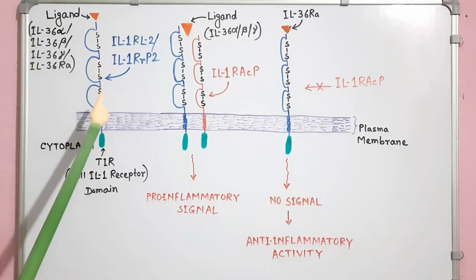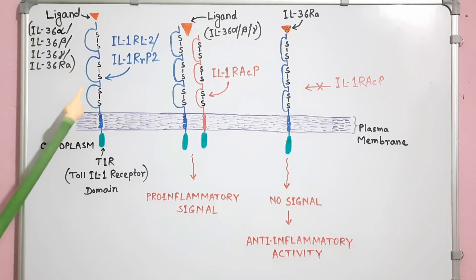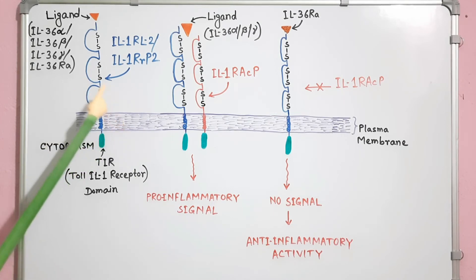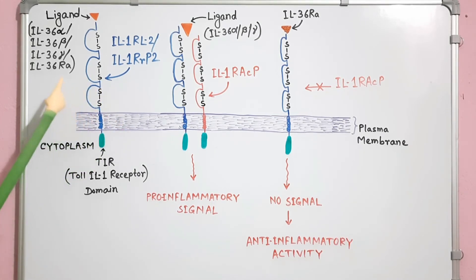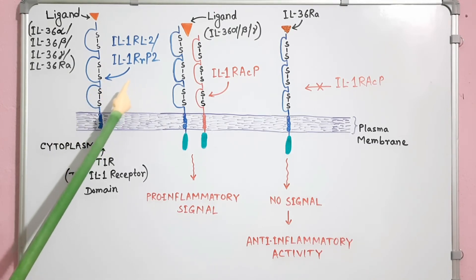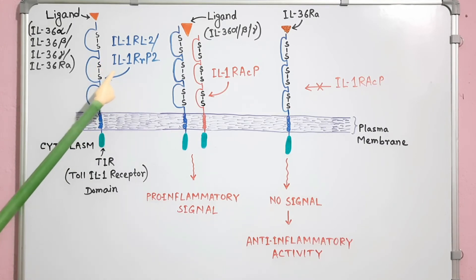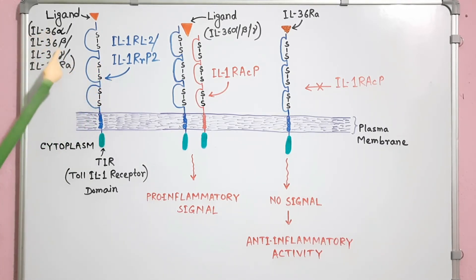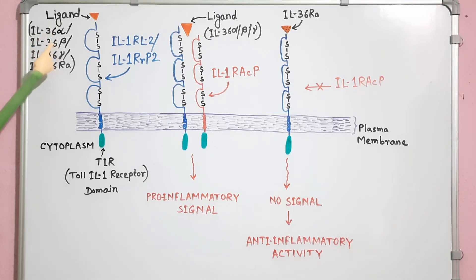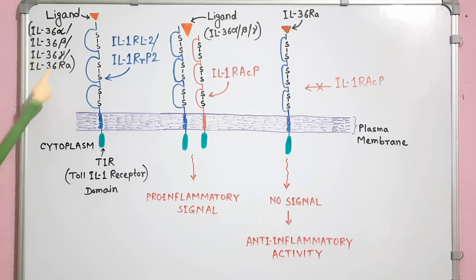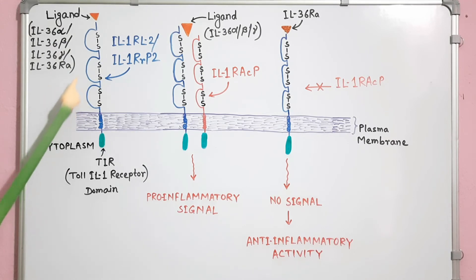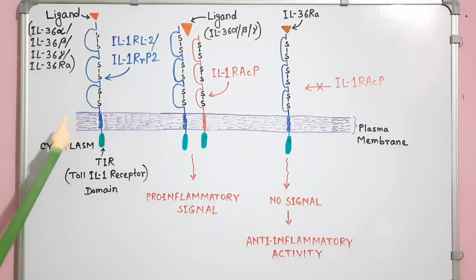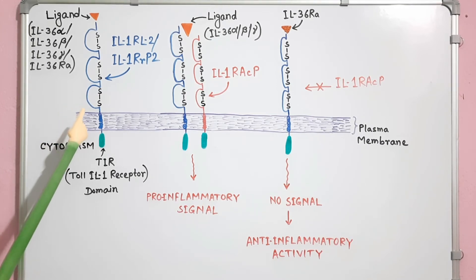This is a diagram of interleukin-1 receptor-like 2, or IL1RL2, also known as IL1 receptor-related protein 2 (IL1RRP2), which is the receptor for IL-36. Its ligands include all members of the IL-36 family: IL-36 alpha, IL-36 beta, IL-36 gamma, and IL-36RA. Additionally, IL-38 is known to bind this receptor. The highest levels of this receptor are found in skin and in memory and mucosal epithelial cell lines.